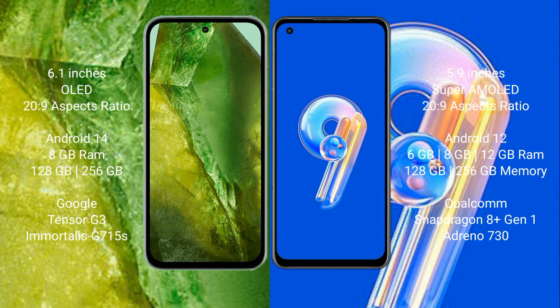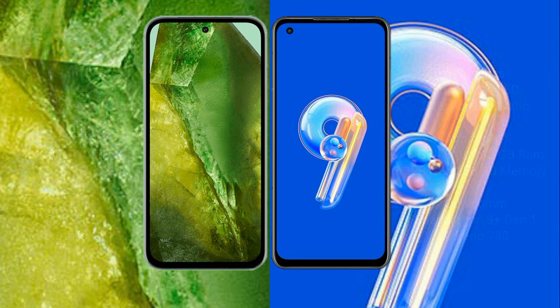Google Pixel 8a comes with 8GB RAM, 256GB internal storage, Google Tensor G3 processor, and GPU G750. Asus Zenfone 9 comes with 6GB, 8GB, or 16GB RAM, 128GB to 256GB internal storage, Qualcomm Snapdragon 8 Gen 1 processor, and Adreno 730 GPU.